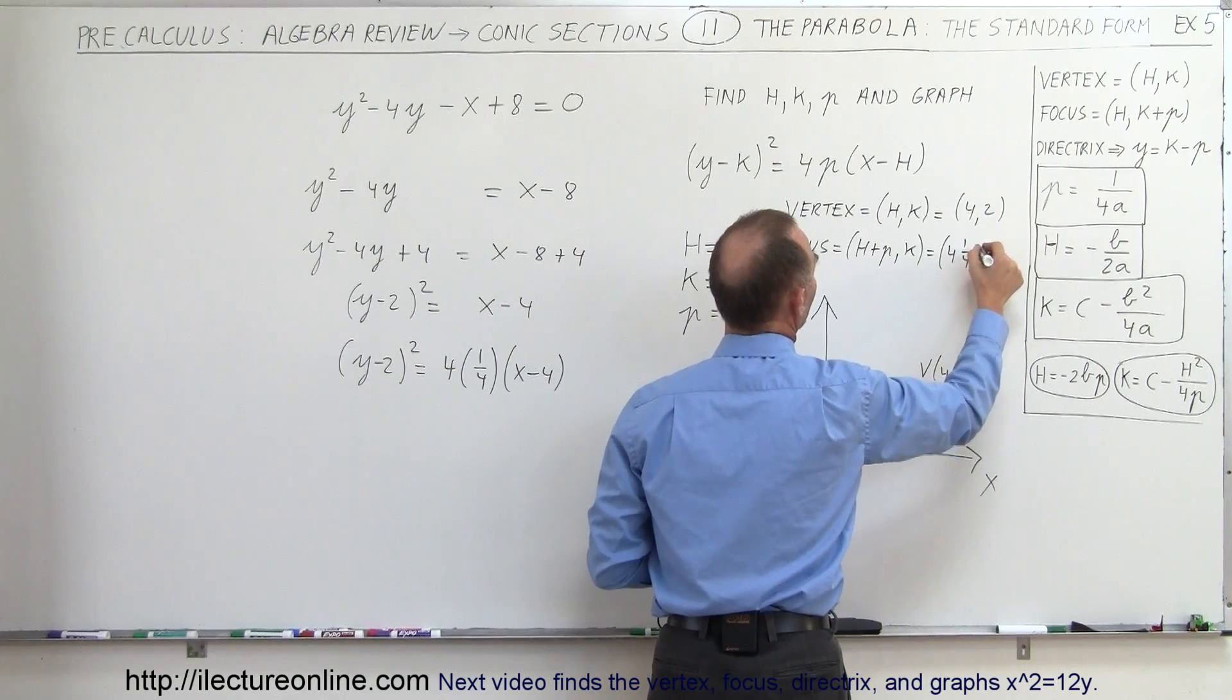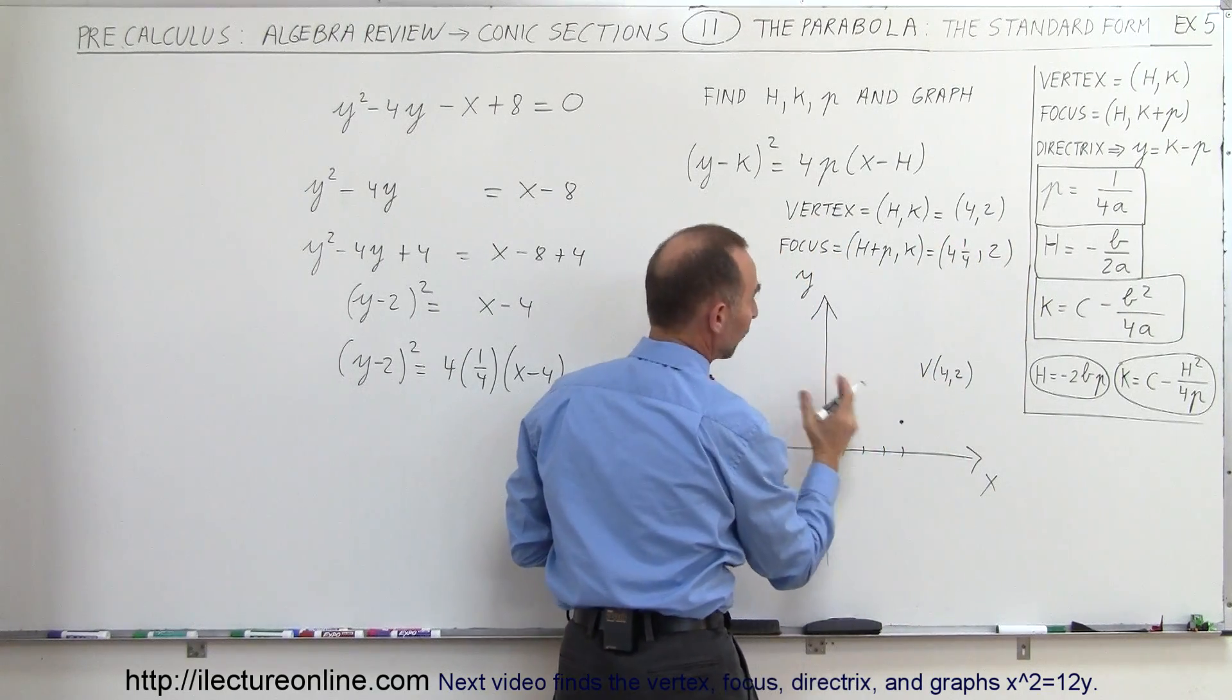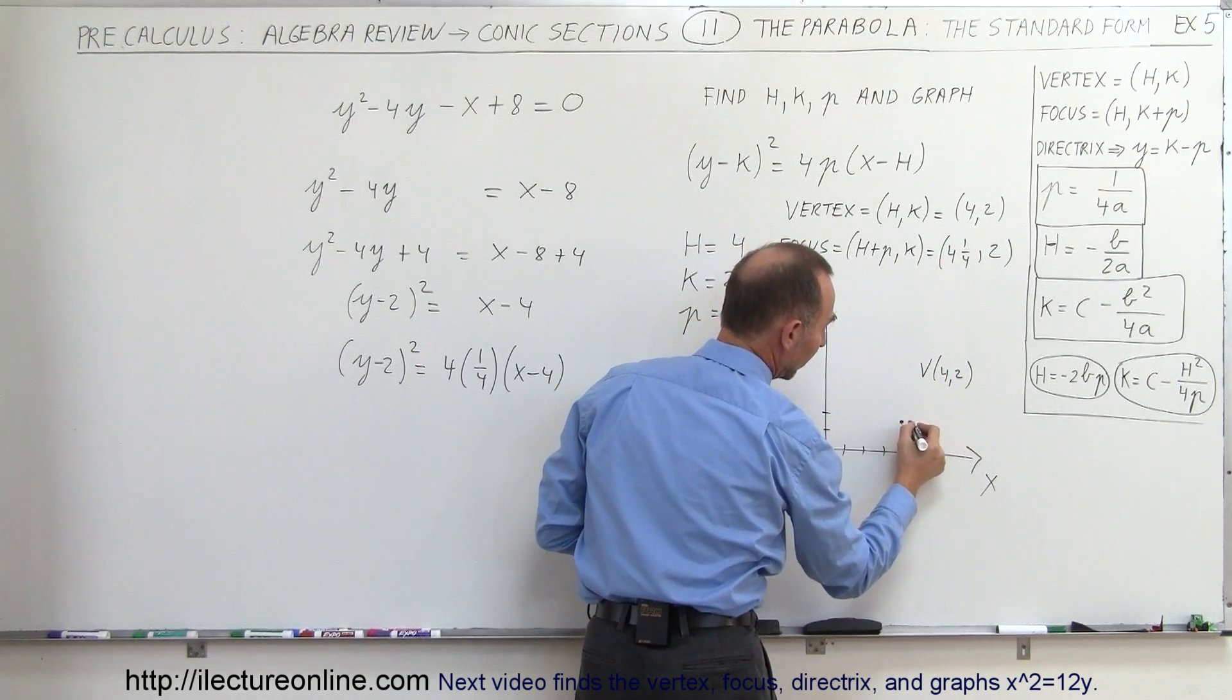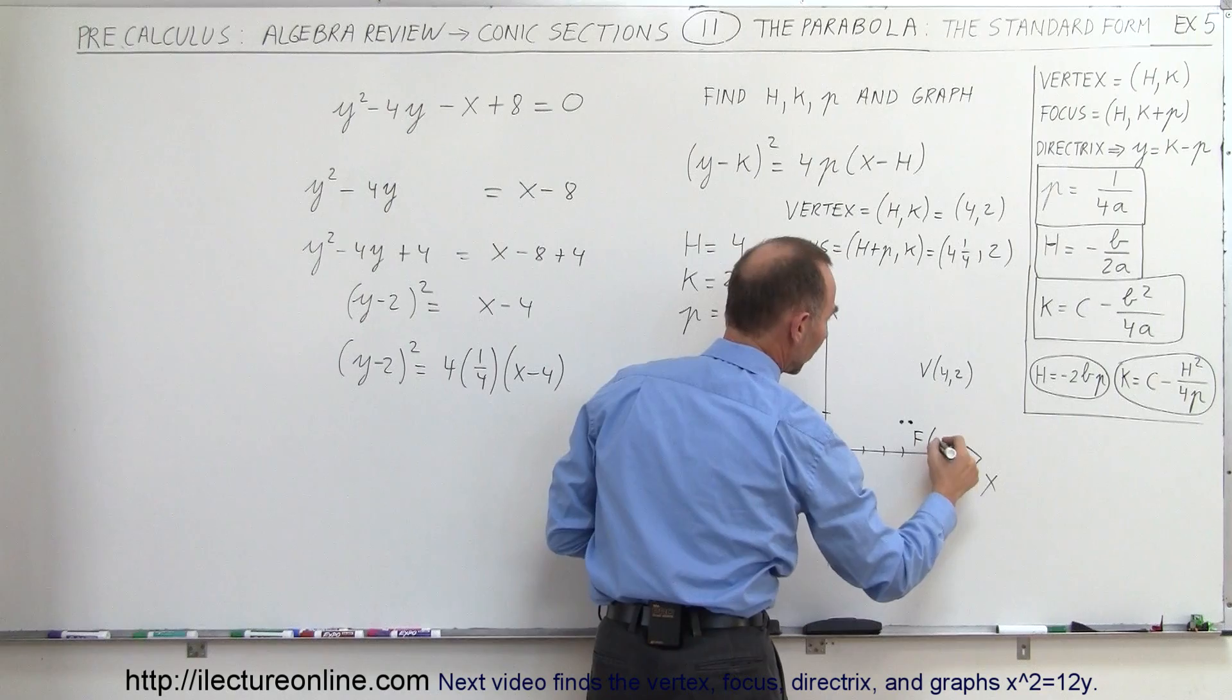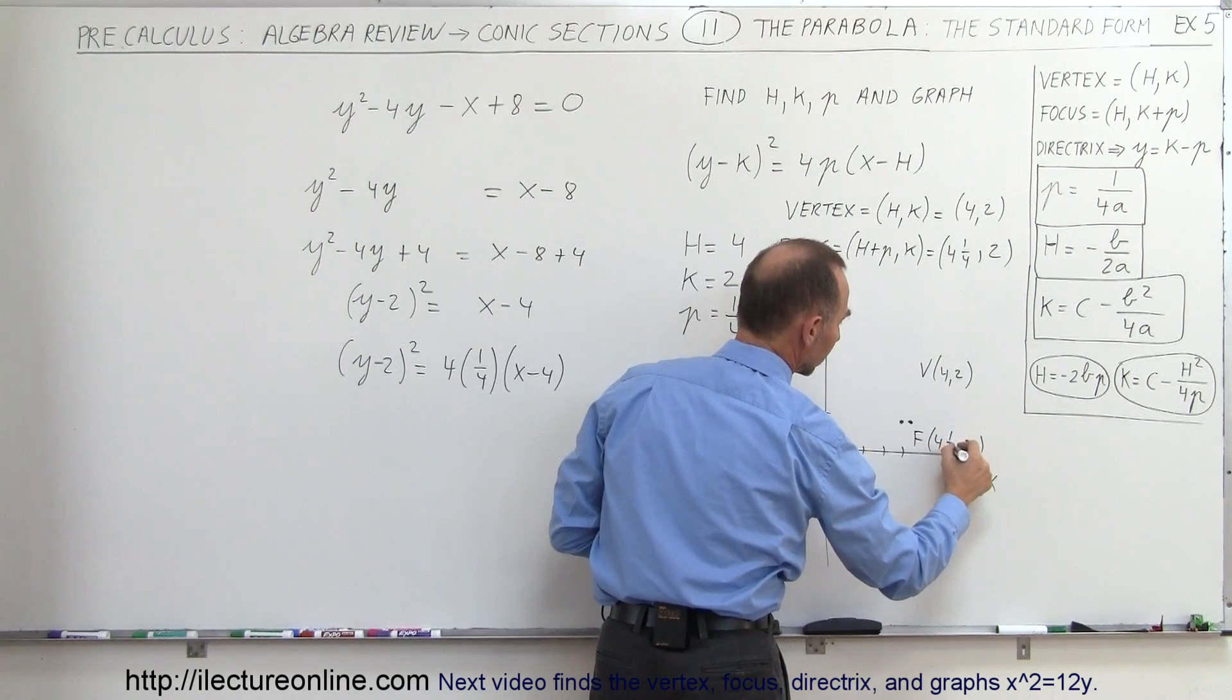And k is still 2. That means the focus is just to the right by one quarter of a unit to the right, right there. There's my focus. And my focus is at 4 and a quarter and 2, there we go.